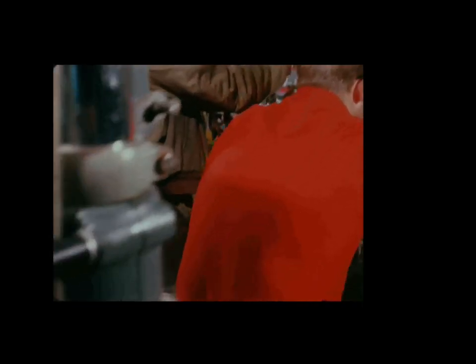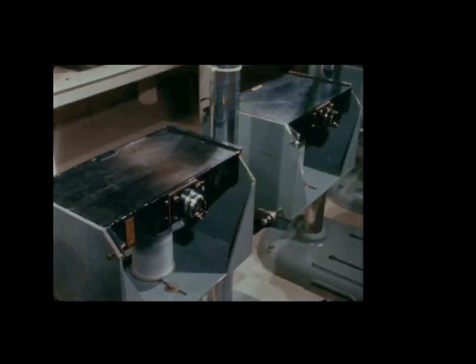Data will be recorded on these 35 millimeter moving film streak cameras. These cameras will operate at a film speed of 100 feet per second while photographing scopes with cathode ray tubes coated with very fast decaying phosphors.